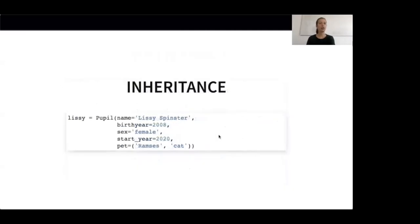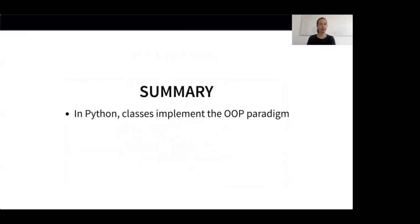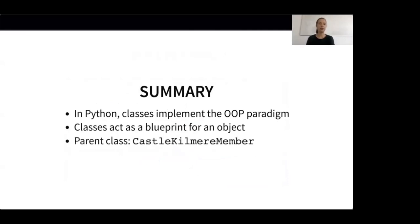We can now create pupils, for example our main character Lizzie Spinster, by calling the class with the necessary arguments like Lizzie's name, her birth year and so on. Classes in Python implement the paradigm of object-oriented programming. They act as a blueprint for an object and describe what properties and behavior an object should have. We created the CastleKilmer member class and used inheritance to create a child class Pupil. The child class inherits all methods and attributes from the parent class but can add new behavior and also override existing behavior. You should be careful not to use too many layers of inheritance because it adds complexity and might make your code harder to read.